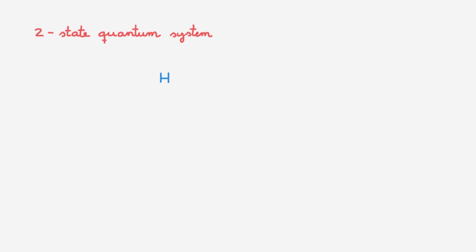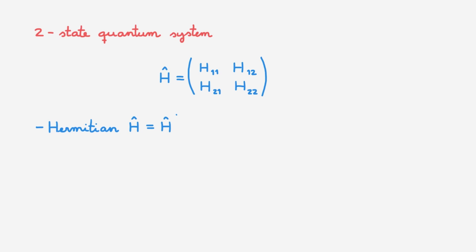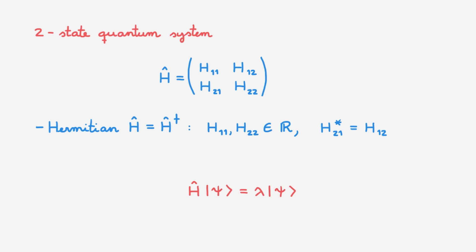Let's set up the basics of a two-state quantum system. We consider a general Hamiltonian H, which can be expressed as a two-by-two matrix. Remember that the Hamiltonian is a Hermitian operator, so H is equal to H dagger. We find that for a two-by-two matrix to represent a Hermitian operator, the diagonal elements H-one-one and H-two-two are real numbers, and the off-diagonal elements are the complex conjugates of each other. The aim of today's video is to find the eigenvalues of a general Hamiltonian of a two-state quantum system, and that means we will be solving this eigenvalue equation, where these are the eigenvalues and these are the eigenstates.